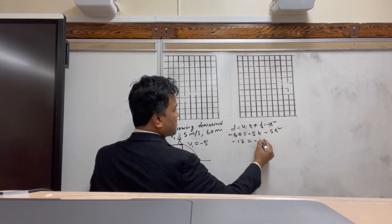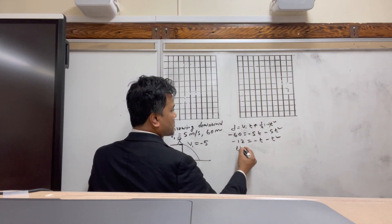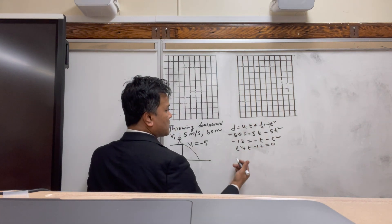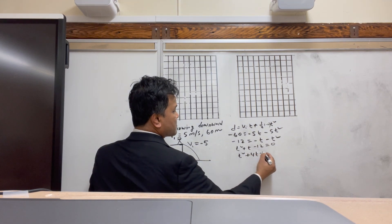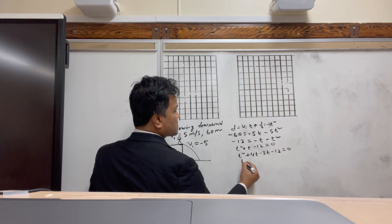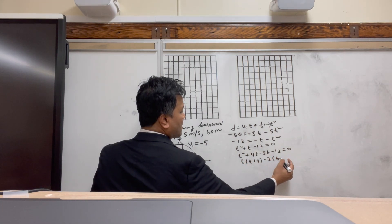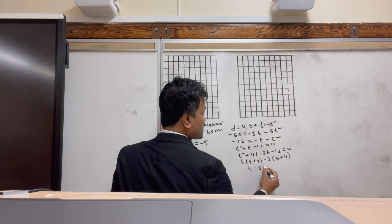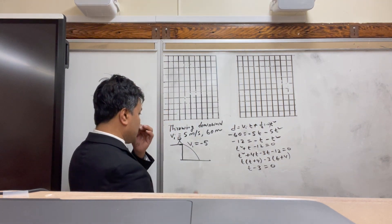Divide everything by 5 to get: 12 = -t - t². Bring everything to the left side: t² + t - 12 = 0. Factoring gives t² + 4t - 3t - 12 = 0, so (t + 4)(t - 3) = 0, meaning t = 3 seconds.